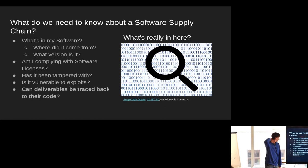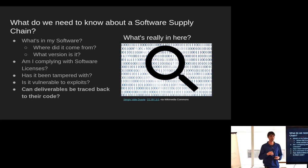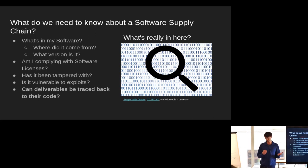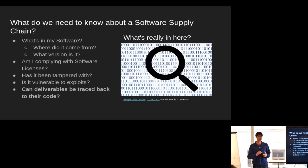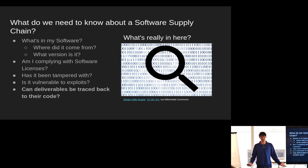What do we need to know about what's in our software? When we have a piece of software — some sort of binary or something like that — we need to know what's in it: where did it come from, what version is it, and if there are any software licenses, we'd like to know what they are so we can properly comply with them. We need to know if the software has been tampered with, either maliciously or unintentionally, and whether it's vulnerable to exploits. Basically, the question we want to answer is: can we trace the binaries back to the source code?